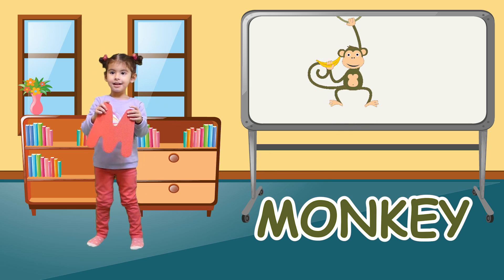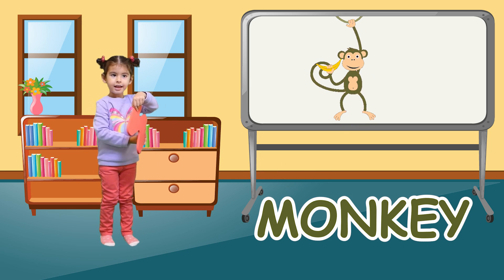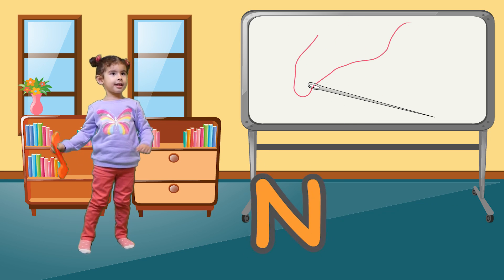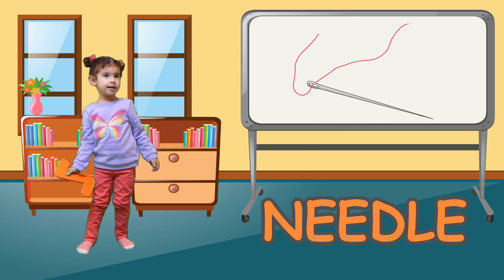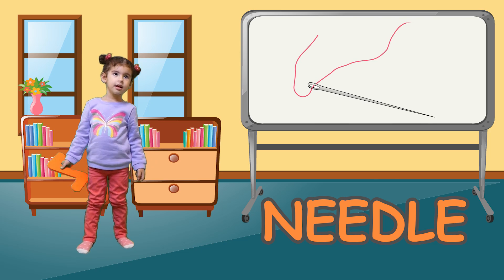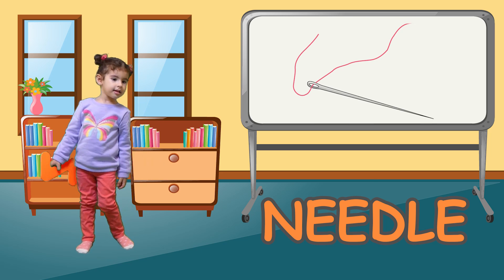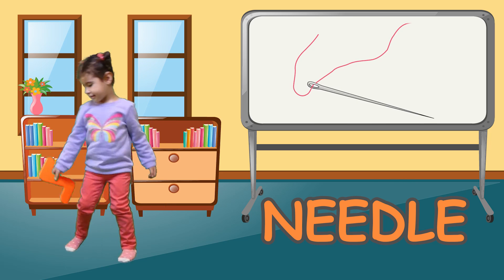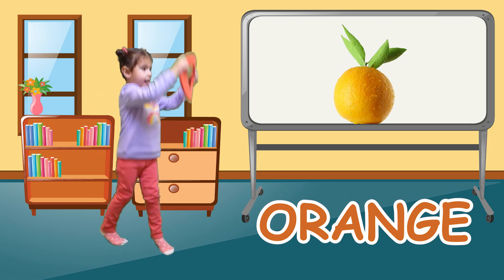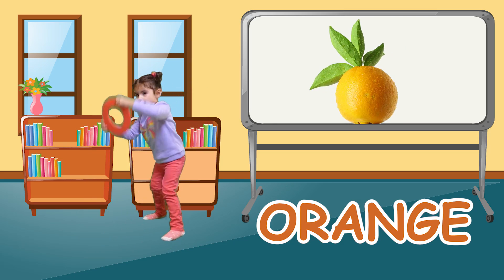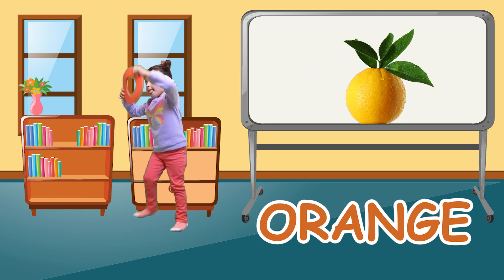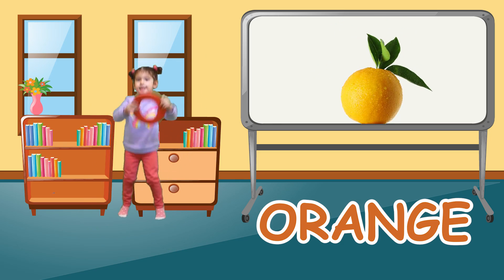M is for monkey. M, monkey, M, monkey. N is for needle. N, needle, N, needle. O is for orange. O, orange, O, orange, O, orange.